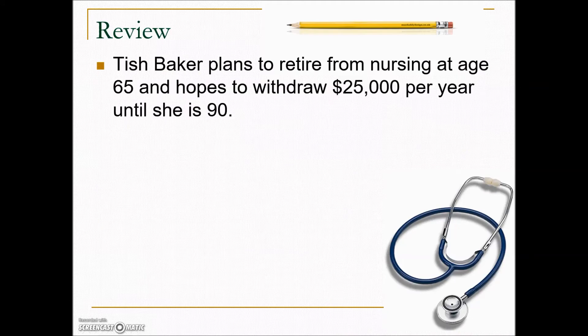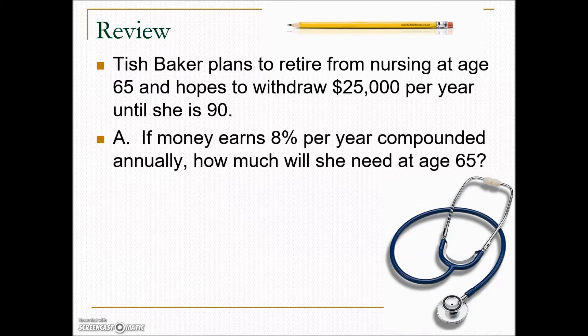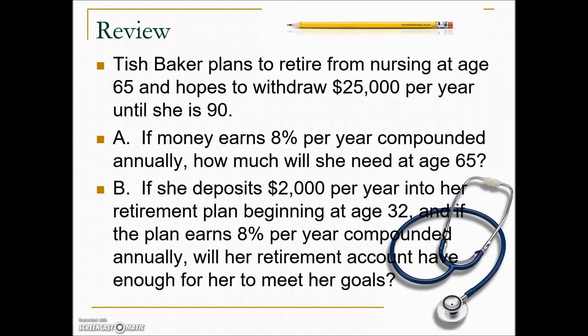In this next example, Tish Baker plans to retire from nursing at age 65 and hopes to withdraw $25,000 per year until she's 90. If money earns 8% per year compounded annually, how much will she need at age 65? So we're looking for that present value — the lump sum needed at retirement.